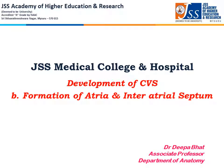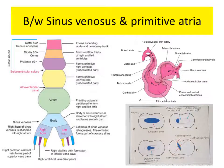Welcome to DB Anatomy. Under the development of CVS, in this video let us study the development of atria and the interatrial septum. The primitive heart tube is made up of four bulges. To recapitulate from the venous to the arterial end, they are sinus venosus, primitive atria, primitive ventricle and bulbus cordis.